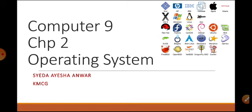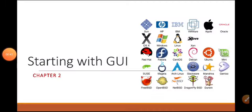Today we are going to learn about the basic icons of Windows operating system. We all know that Microsoft Windows is a most popular operating system and it has a graphical user interface. Graphical user interface is easy to learn and use because it presents all information in the form of icons, pictures, menus, and pointers.